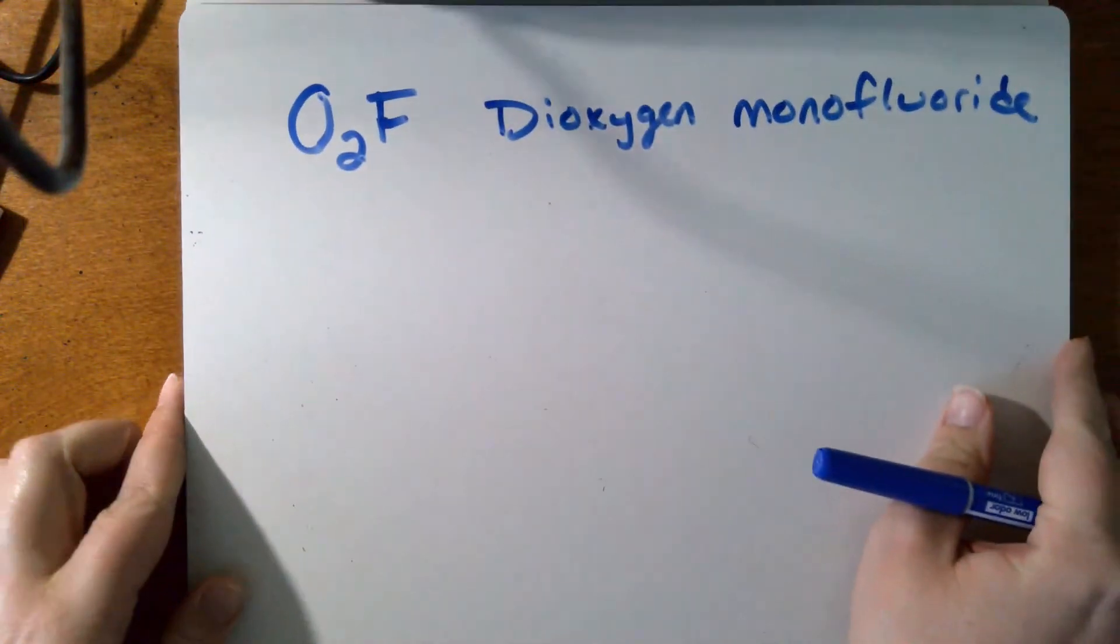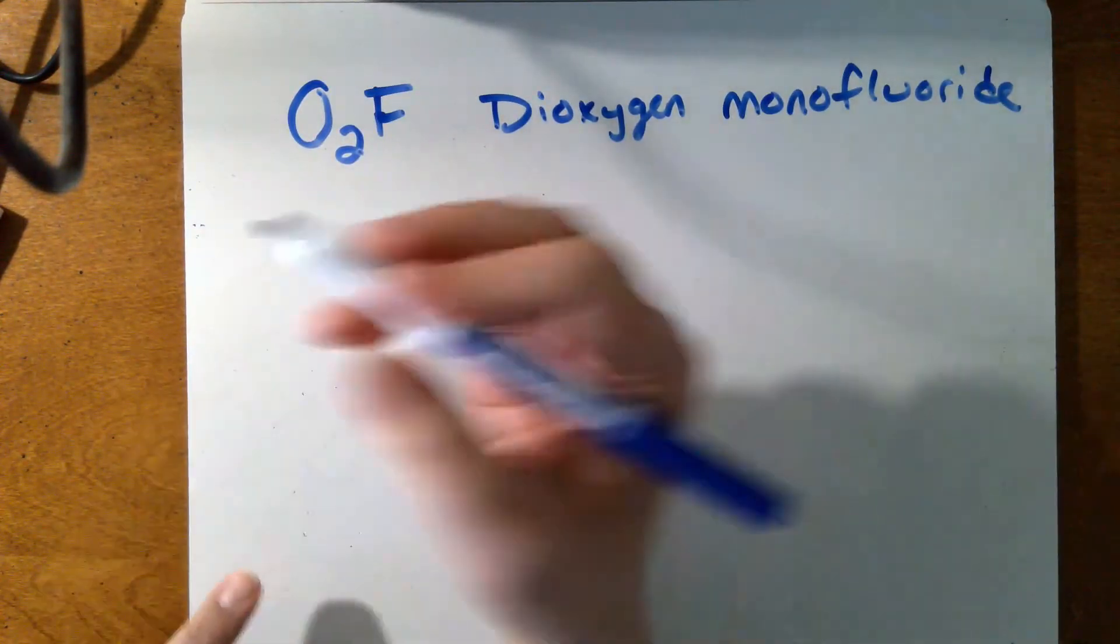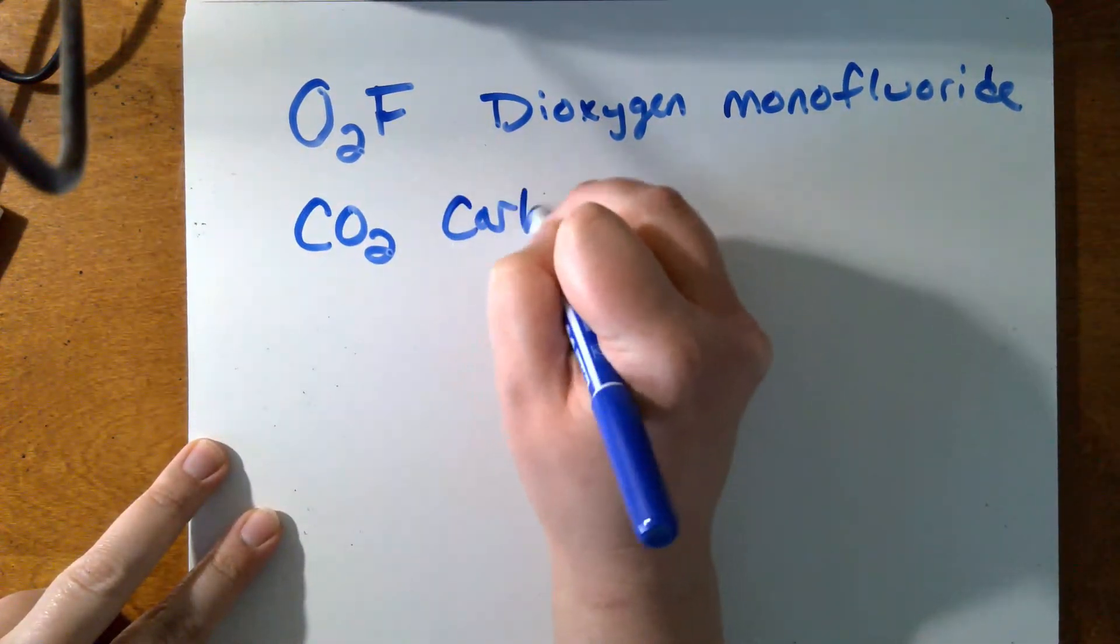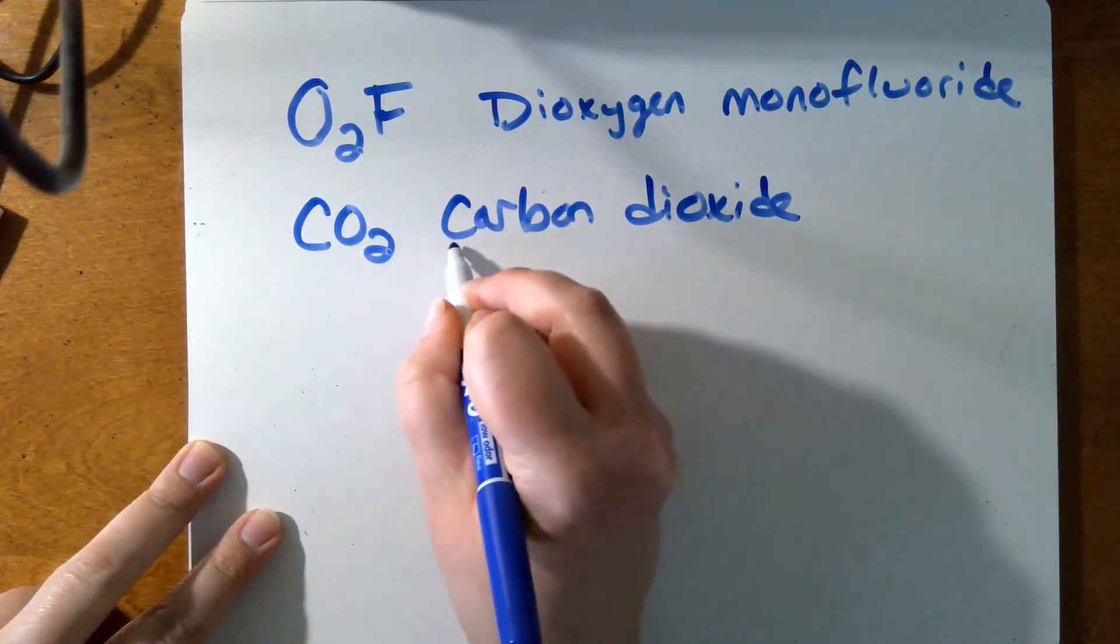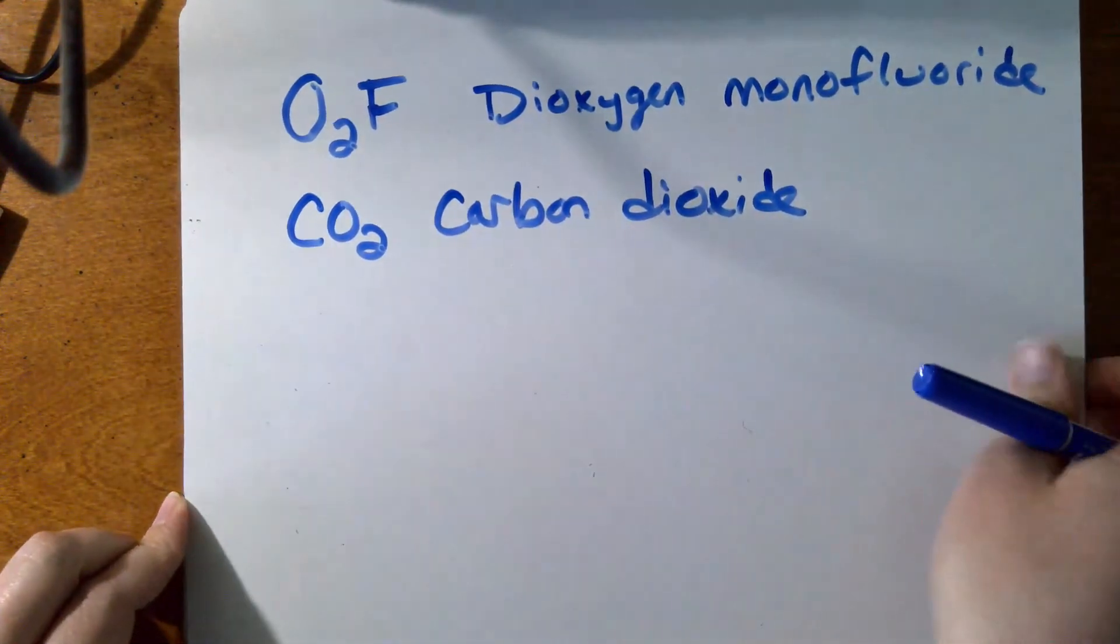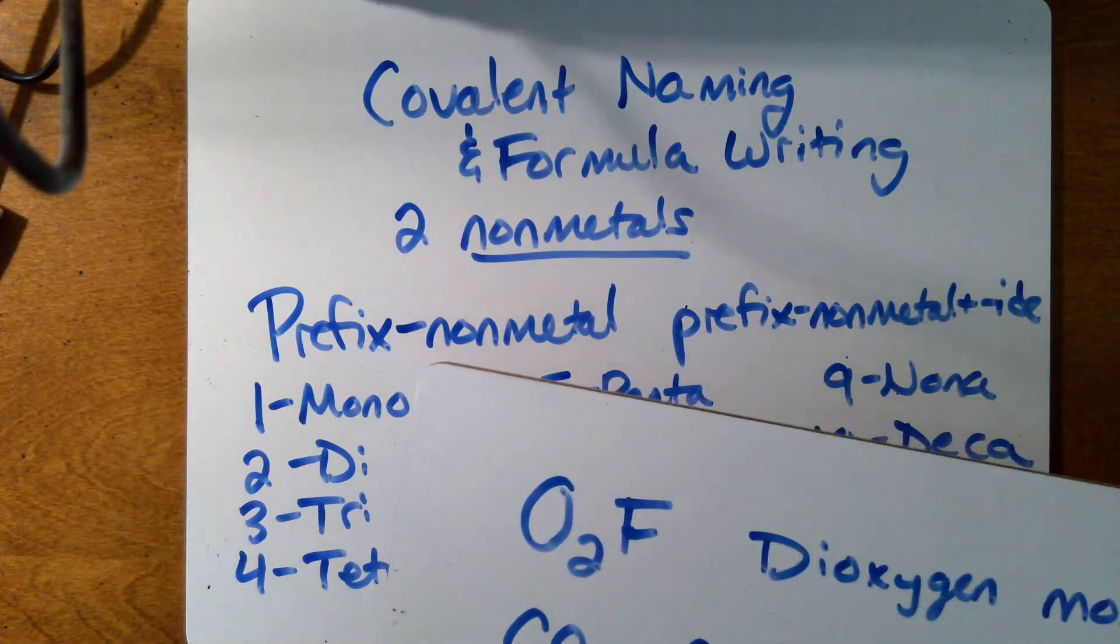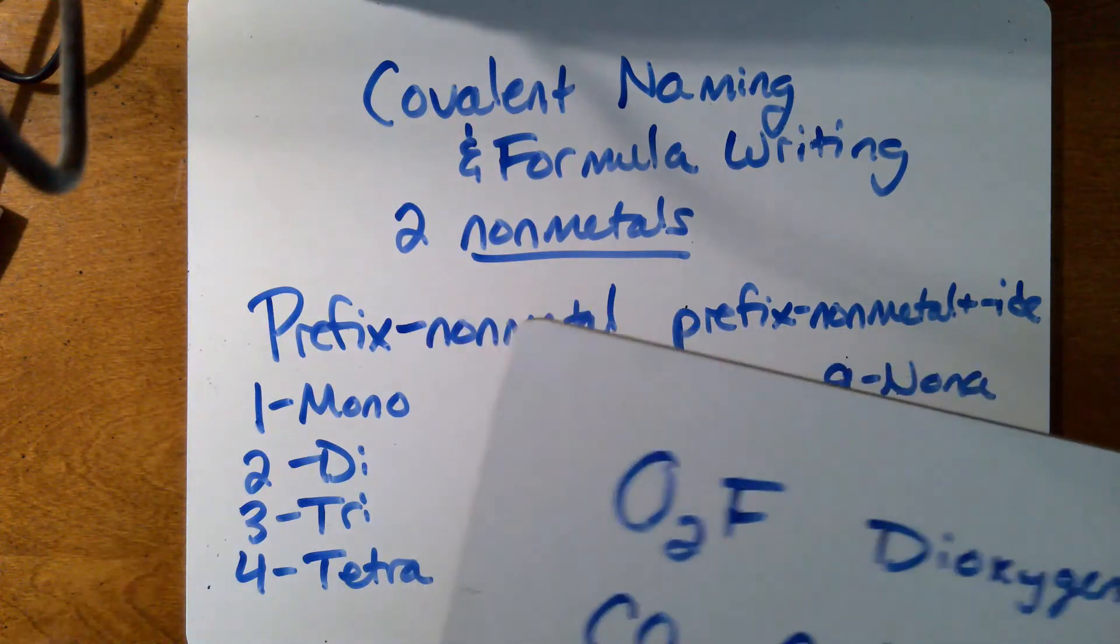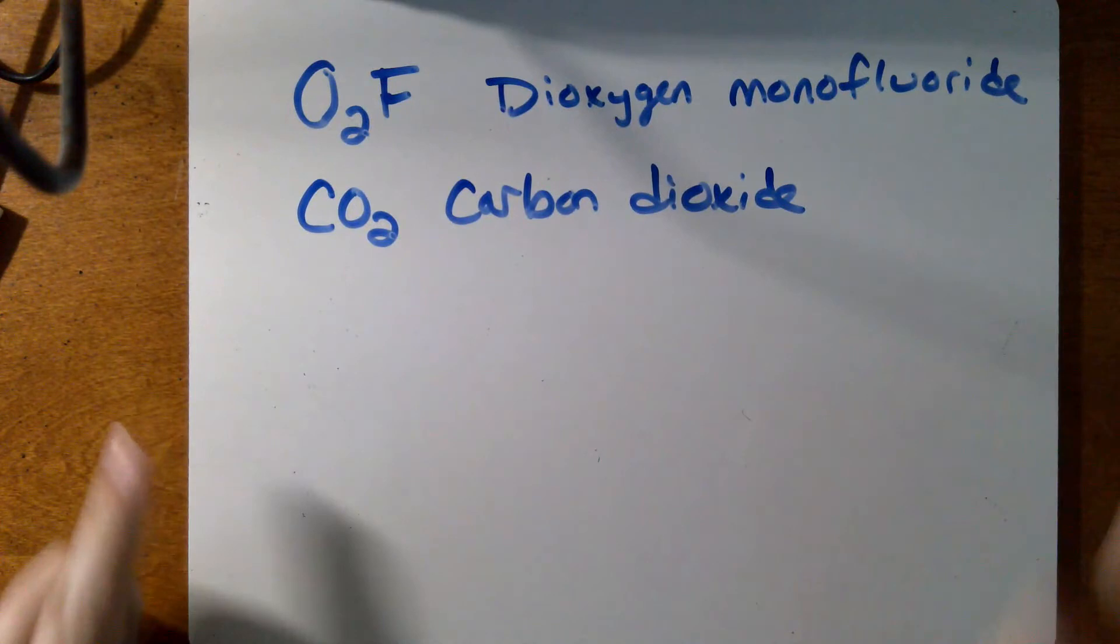Now I want to look at a compound that you've heard of before, certainly, to illustrate an important rule. So CO2, you know that that's called carbon dioxide. So you might notice, hey, there's no prefix on carbon. So we only use the prefix mono on the first word. All the other prefixes could go on either word, but mono only goes on the first one. So just make sure that you're aware of that exception.